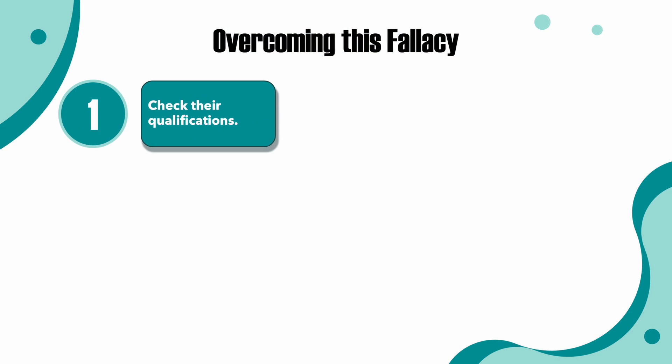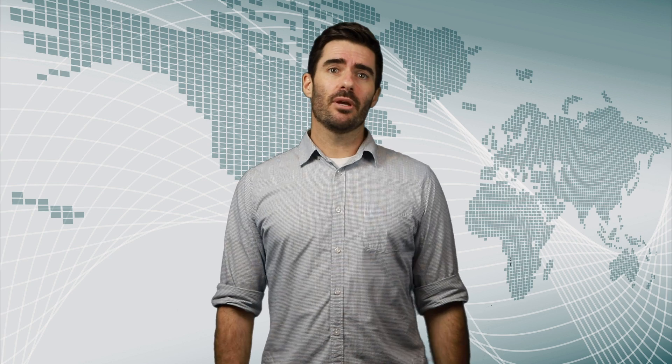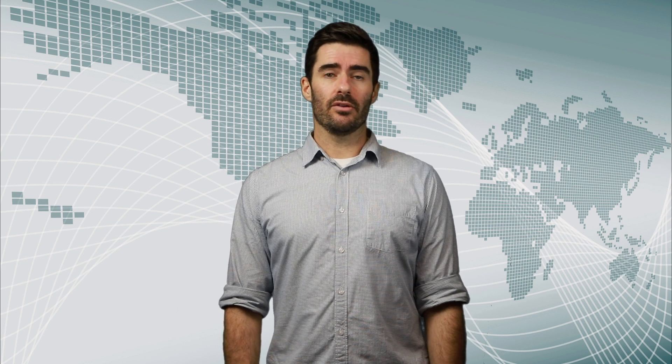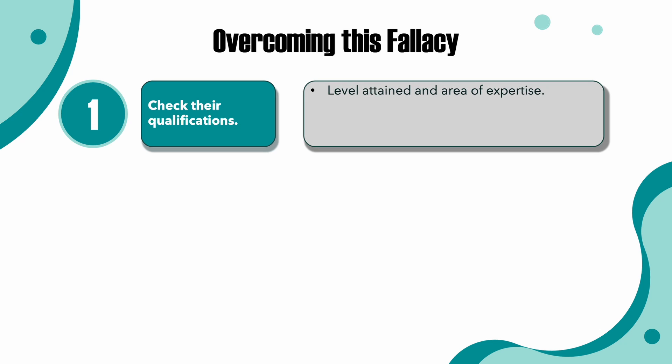One: check their qualifications. A lot of times we put trust in someone with no qualifications at all, like a kid who believes something because their parents told them, or when we listen to a celebrity who's endorsing a product. I mean, I guess it's possible that Jamie Lee Curtis has a qualification in microbiology, but I doubt it. You might also see a person giving opinions on topics that are outside their area of expertise. So when checking a person's qualifications, make sure you look not just at the level they've attained, but also the area that they specialize in. A good way to do that is to check their bio section on the website of the company or university that they work for.